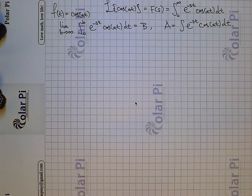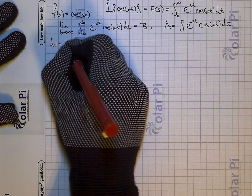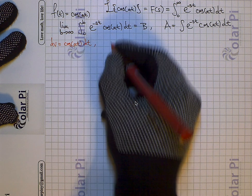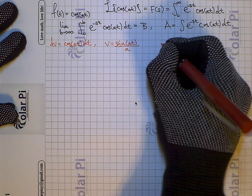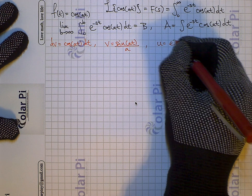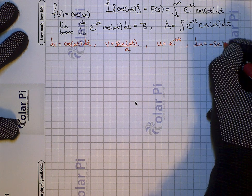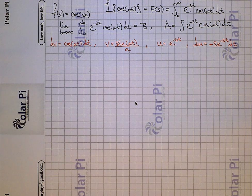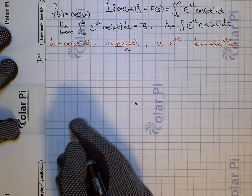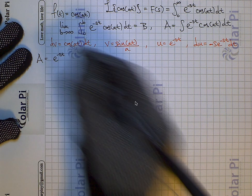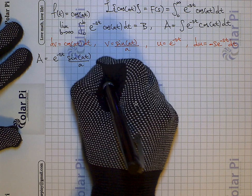Capital A is just an exercise in integration by parts. Let's start with dv equaling cosine of at dt, so then v will equal sine of at divided by a. And then u is e to the negative st — I have no choice — so du will be negative s e to the negative st dt. By the integration by parts formula, capital A is going to equal uv, so that's e to the negative st times sine of at divided by a.